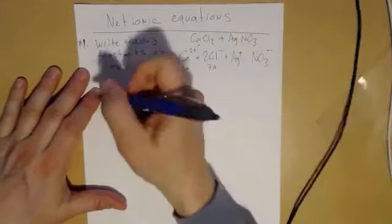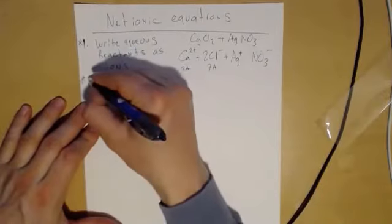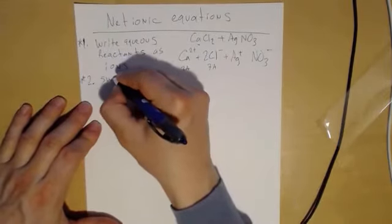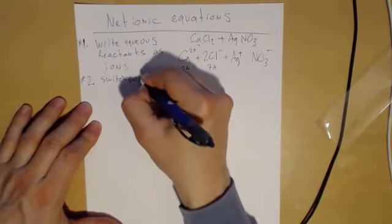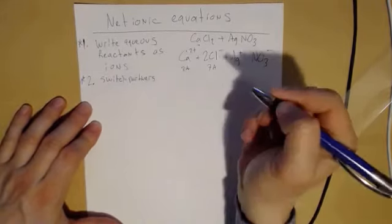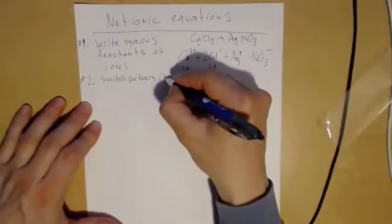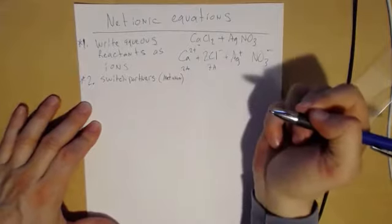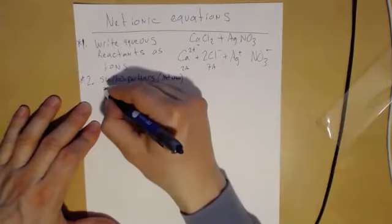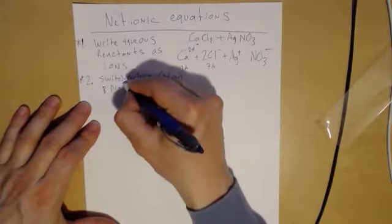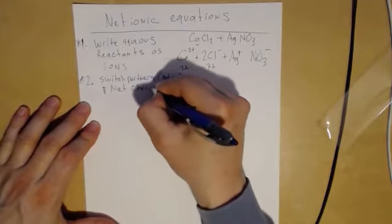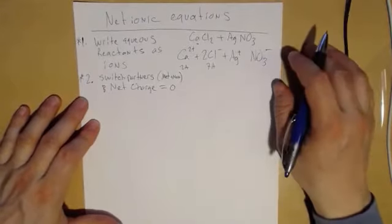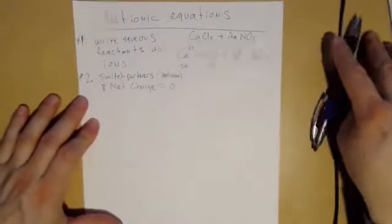So we find the charges and then we switch places. Who goes with who when they switch? That's actually the second step. And that's also one of the hardest steps. Switch partners. Metal. You have to join metal with non. That's really important. And you have to have a net charge equal to zero. Okay.